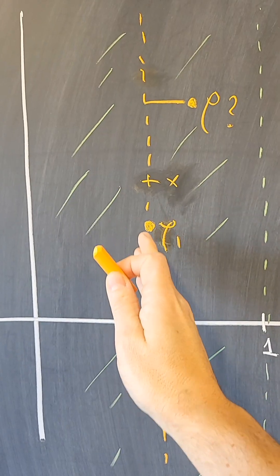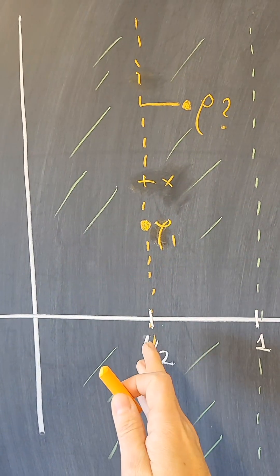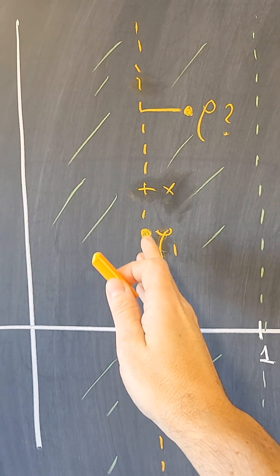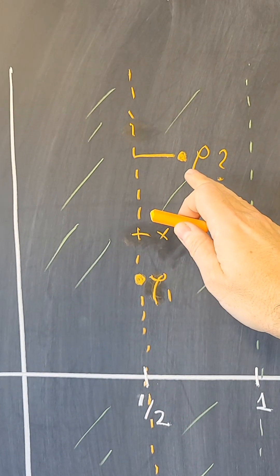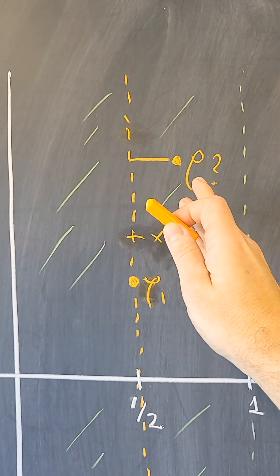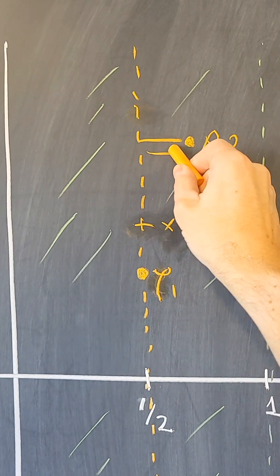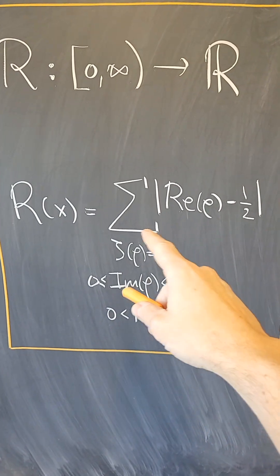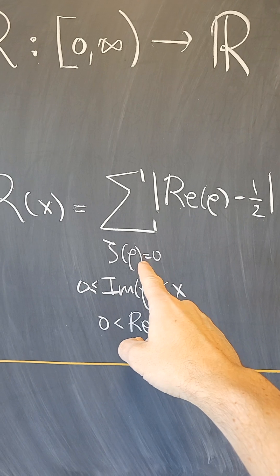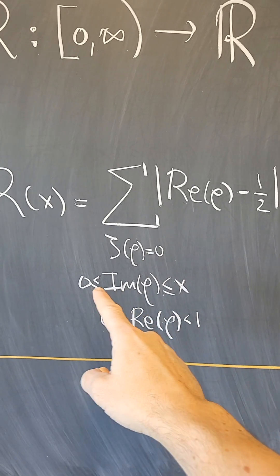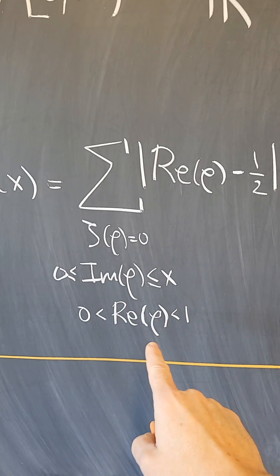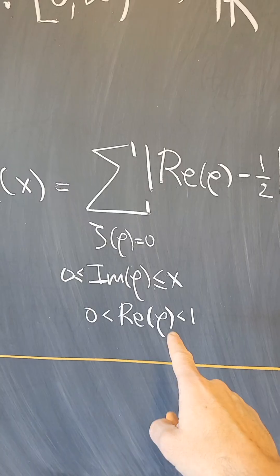all the deviations from the critical line. So this first zero that we know is on the critical line contributes nothing. But if there was any zero that is off of the critical strip, this much would contribute to this sum. That's what the sum is doing. It's adding over zeros of the Riemann zeta function that are of imaginary part up to x,